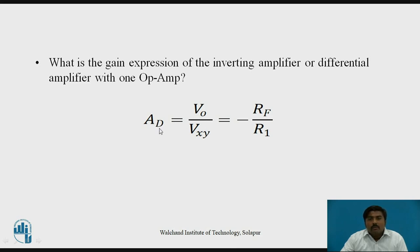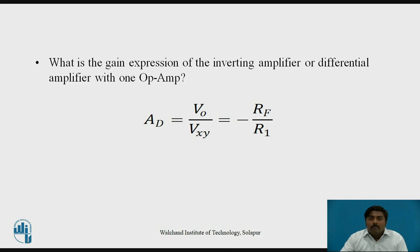In the inverting amplifier case, instead of AD you use A, VO remains the same, and instead of Vxy it becomes Vin, since there is only a single input source. In the differential amplifier there are 2 inputs, so the difference of those two inputs is the total input voltage. The gain equals minus RF upon R1, where RF is the feedback resistance and R1 is the resistance with the input source.